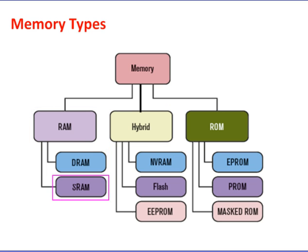SRAM retains its contents as long as electric power is applied to the chip. If the power is turned off or lost temporarily, its contents will be lost forever. DRAM, on the other hand, has an extremely short data lifetime — typically about four milliseconds. A DRAM controller is used to periodically refresh the data stored in DRAM. By refreshing the data before it expires, the contents of memory can be kept alive as long as they are needed.